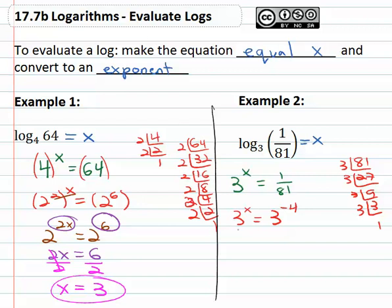And then we can say, well if the bases are the same, the exponents also must be the same. So x equals negative four, which means log base three of one over eighty one is equal to negative four.